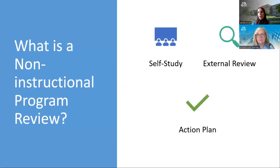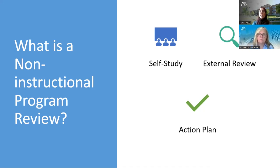A non-instructional program review is broken up into three categories. The self-study, which is a lengthy document put together by the director or coordinator giving the history, current projects, needs of improvement, and points of pride. The external review, which is a third party that comes in and evaluates your program and gives you recommendations. Lastly, there's the action plan — what do you plan on doing? What is your roadmap? We like to condense this into what can be done in about a two to three year time span.